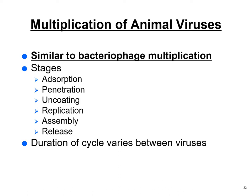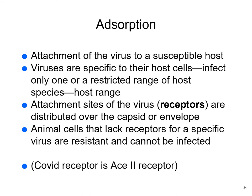Multiplication of animal viruses is very similar to phage virus multiplication. The steps are: adsorption, penetration, uncoating, replication, assembly, and release. How long this takes depends on the virus.